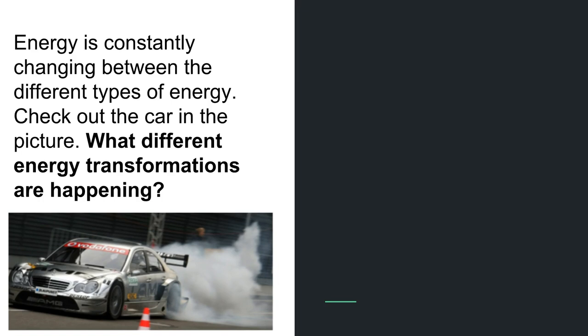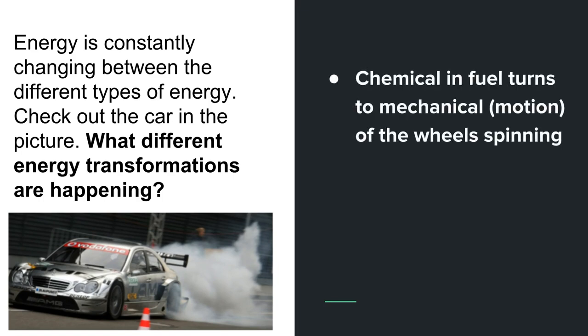Well first of all, what is it has a car go in the first place? What does a car need in order to go? Needs fuel, right? The chemical energy in fuel turns into mechanical energy because the fuel causes the car to go and the wheels to spin.